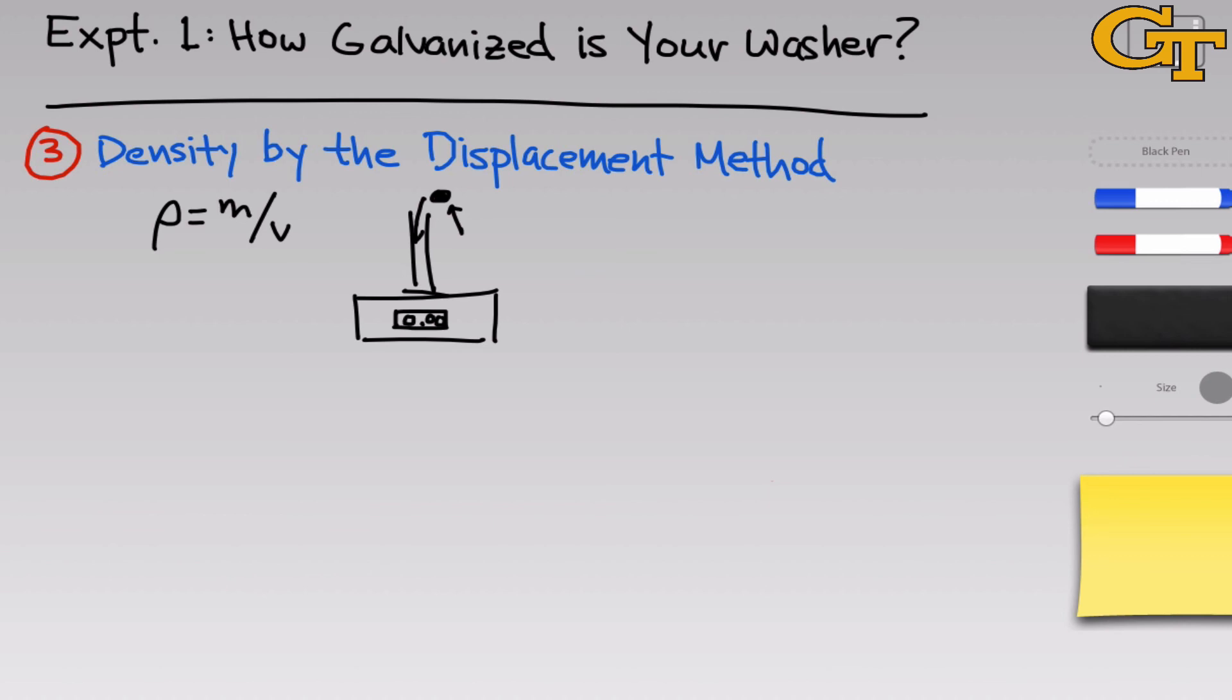The mass is easy enough to measure. We need only mass the sample. But how do we measure the volume? Well in this experiment, we're going to measure the volume of washers not only by the measurement method that we just discussed, but also by what's called the displacement method. The displacement method is quite clever and works whenever the sample is not soluble in the liquid we're using for displacement. So we'll use just water in this experiment.